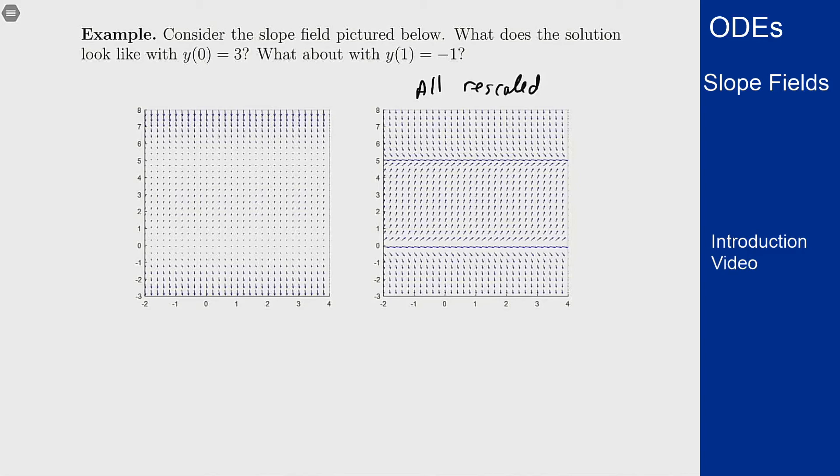So if I take y(0) equals 3 what does the solution look like? Well I can find here is t equals 0 and here is y equals 3. So I know my curve goes through that somewhere. Now I can follow these little arrows. These arrows are pointing upward which means that I know my curve is going to come up this way follow these lines go tangent to them and then flatten out right around here at 5. Just following the arrows I can get to that solution.